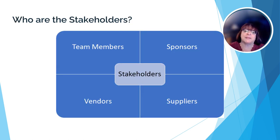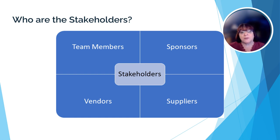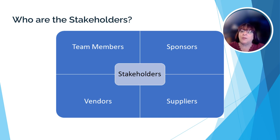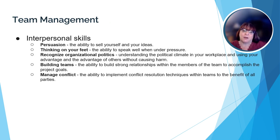A stakeholder is anyone who has an interest in the outcome of the project. Team members can certainly be stakeholders — their advancement within the company may depend on the project outcome. The sponsors or those who initiated the project have a clear stake in the outcome. Vendors who perform work that cannot be performed in-house, as well as suppliers who provide raw materials, also have an interest since they want to be paid and build their reputation for future projects. No matter which stakeholder the project manager is managing, using essential interpersonal skills will lead to a successful project.